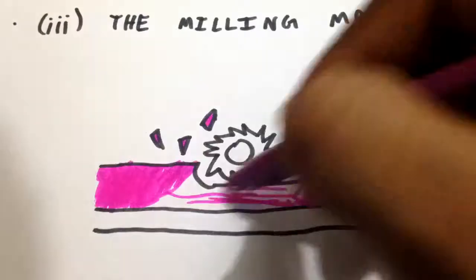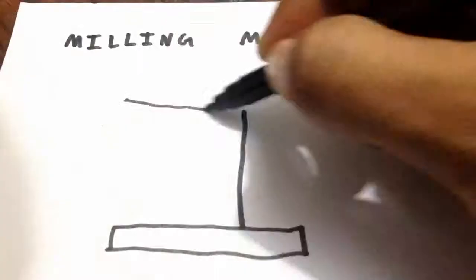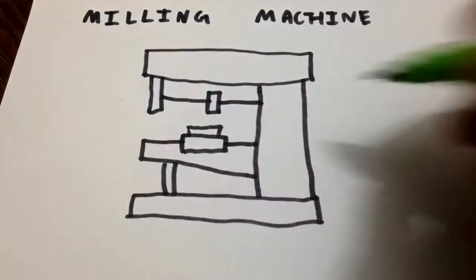Third, Milling Machine. Milling is a process in which the metal removal takes place due to cutting action of a revolving cutter.